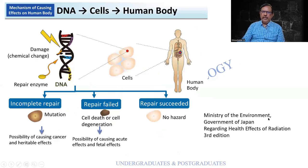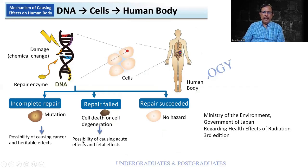This is from the Ministry of Environment, Government of Japan. It very beautifully depicts damage to the DNA: failure of repair results in incomplete repair or mutation. If repair fails and there is cell degeneration or death, there won't be a malignant transformation. But if repair is incomplete, mutation and multiplication can lead to malignancy.